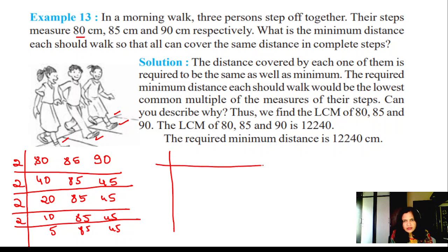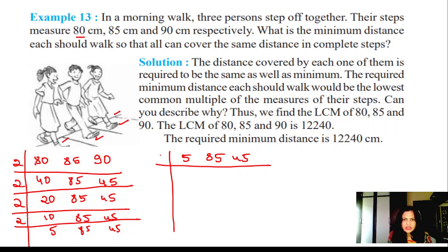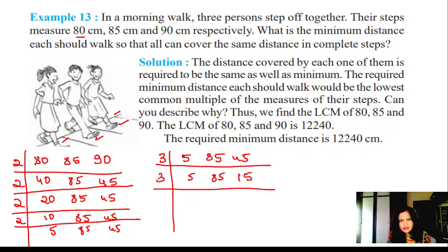Now we have 5, 85, and 45. We check divisibility by 3: 45 is divisible by 3, but 85 is not (8+5=13, not divisible by 3). So 45 ÷ 3 = 15, 85 stays, 5 stays. Again by 3: 15 ÷ 3 = 5, 85 stays, 5 stays. Now all three numbers are 5, so divide by 5: we get 1, 17, 1.